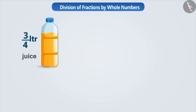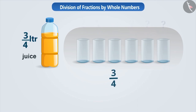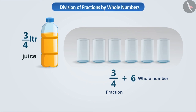Suppose this bottle contains three-fourth litre juice. If it has to be divided equally among six children, then how much juice will each child get? To find this, we have to divide three by four by six. Here we are dividing a fraction by a whole number.